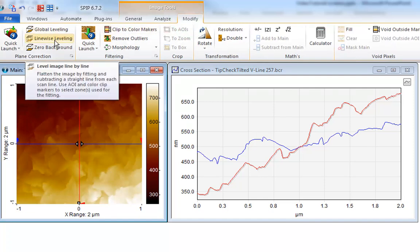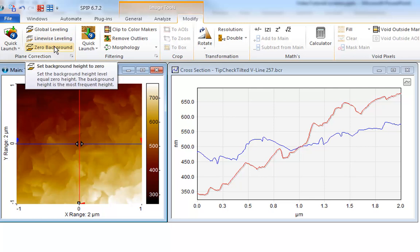Global leveling, Linewise leveling, and Zero background. Global leveling is used to compensate for small tilt, and this is what we will use for this image.